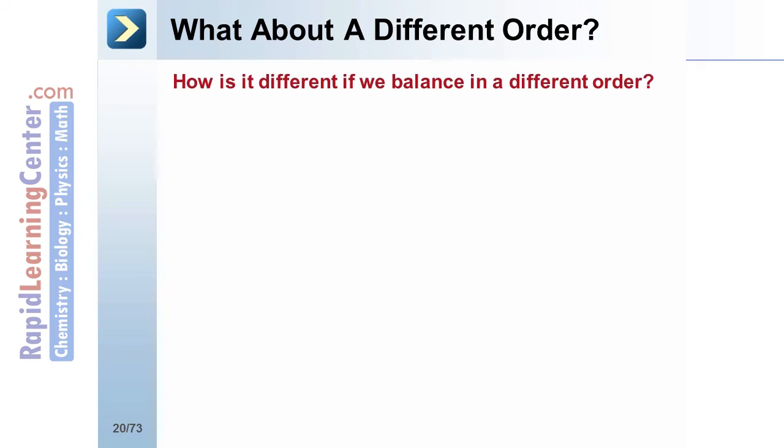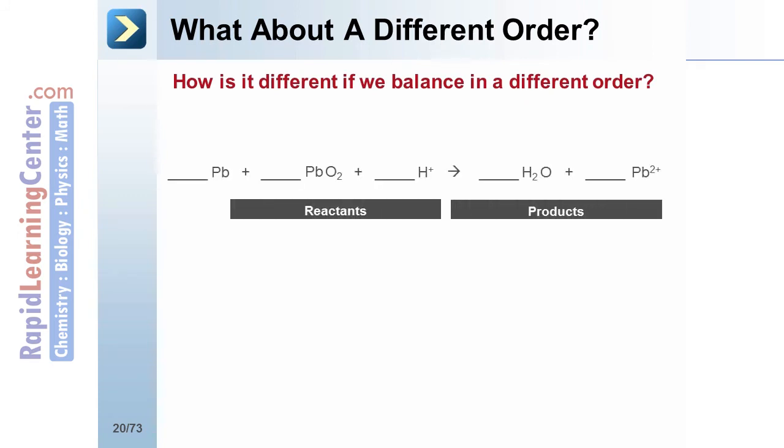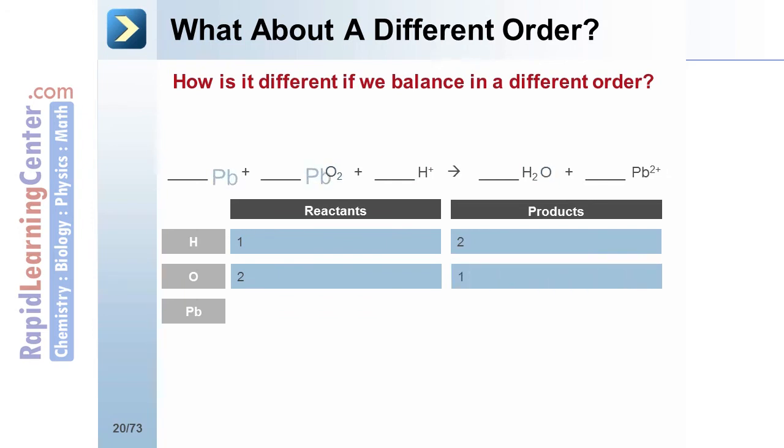But what does it change if you balance in a different order? The initial table will look identical. If you choose to balance the hydrogen first, followed by the oxygen, the hydrogen will become unbalanced. In the process of fixing the oxygen, the hydrogen has become unbalanced again.